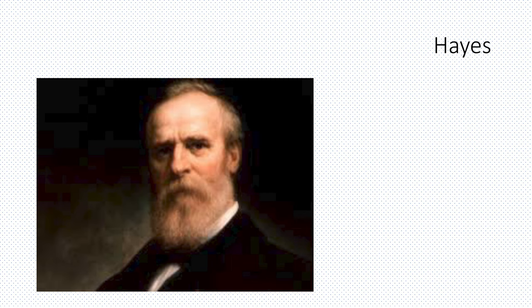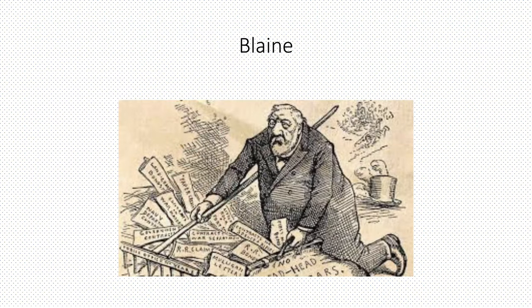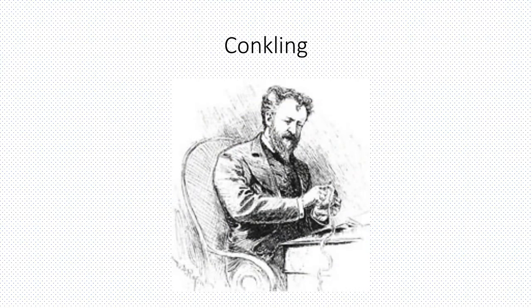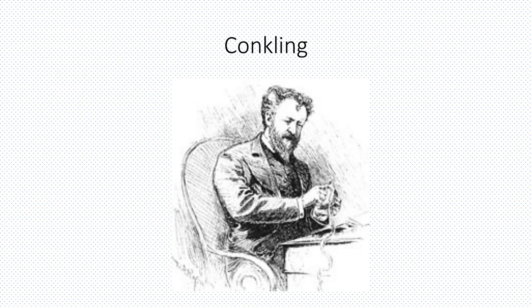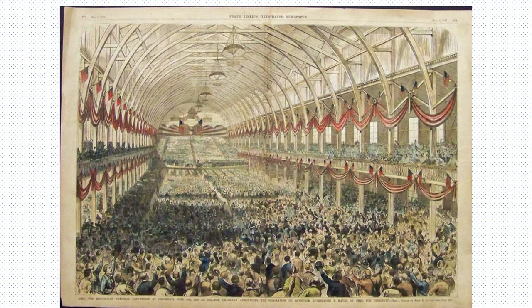Hayes won the presidential nomination of the Grand Old Party in 1876 by being what is typically called a compromise candidate. The front-runner, James G. Blaine from the state of Maine, had made political enemies within the party, as had the second runner, Roscoe Conkling of New York. Thus the door was open for an afterthought candidate like Hayes to sneak in. Conveniently, the Republican National Convention was held in Hayes' hometown of Cincinnati that year. The way party conventions were conducted in those days, nominees would be put forth and votes would be taken until there was a consensus or at least a clear majority. Hayes won on the seventh ballot.